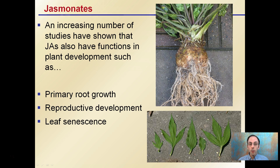An increasing number of studies have shown that these jasminates also function in plant development, including primary root growth — very important for root development — reproductive development, and also leaf senescence. Senescence is the natural aging of the plant that causes it eventually to degrade and fall off. So this is a brief overview of jasminates or jasmonic acid.